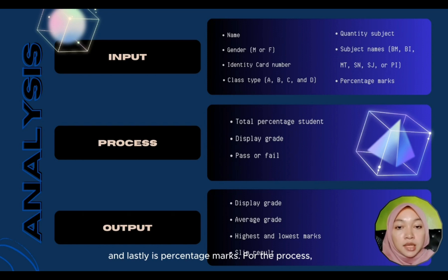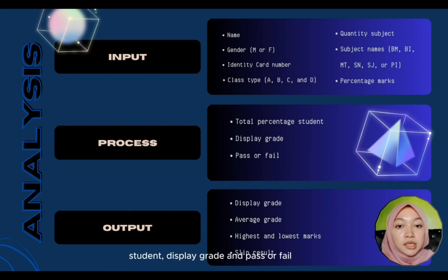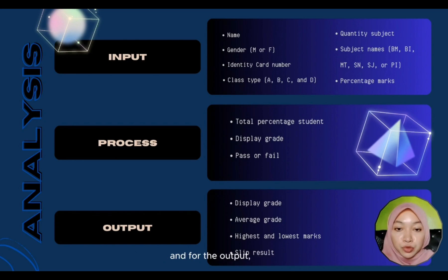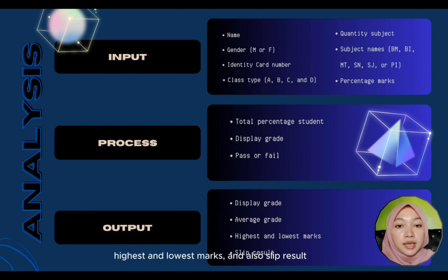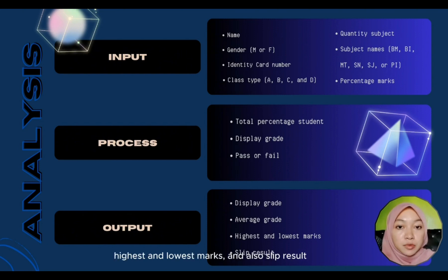For the process, we have total percentage student, display grade, and pass or fail. And for the output, we included the display grade, average grade, highest and lowest marks, and also slip results.